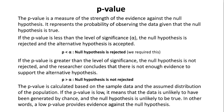The p-value is calculated based on the sample data and the assumed distribution of the population. If the p-value is low, it means that the data is unlikely to have been generated by chance and the null hypothesis is unlikely to be true. In other words, a low p-value provides evidence against the null hypothesis.